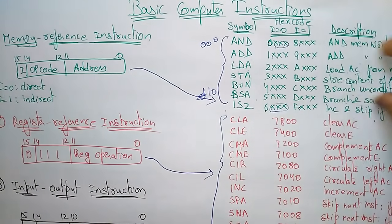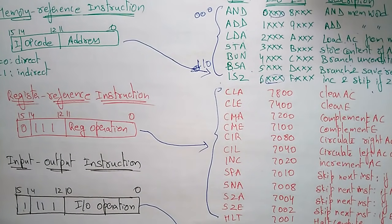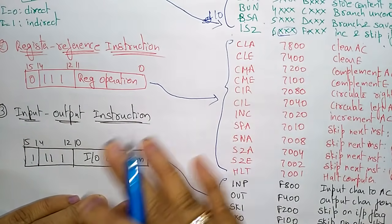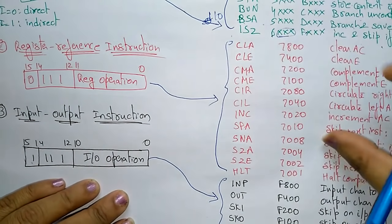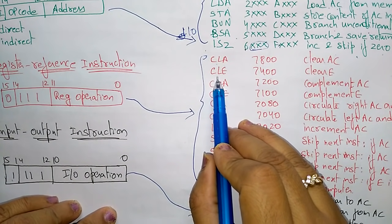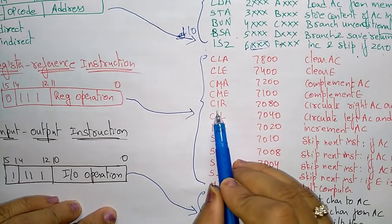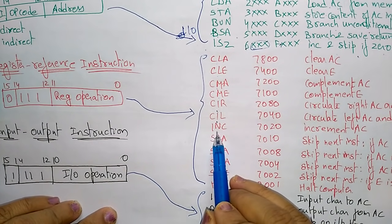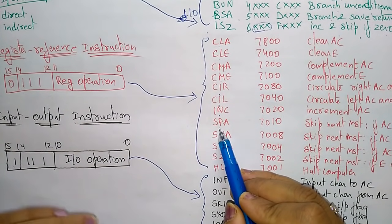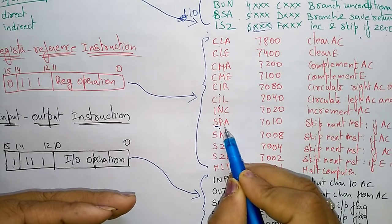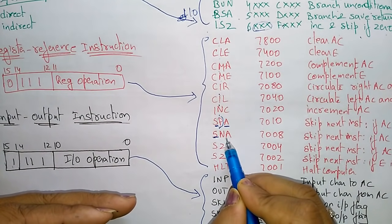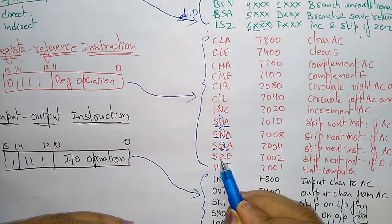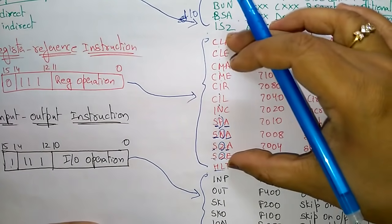Now coming to the register reference instructions: these include complements, circulate, and skip operations — CLA (clear accumulator), CLE (clear E), CMA (complement accumulator), CME (complement E), CIR (circulate right accumulator and E), CIL (circulate left accumulator and E), INC (increment accumulator), SPA (skip if accumulator is positive), SNA (skip if accumulator is negative), SZA (skip if accumulator is zero), SZE (skip if E is zero), and HLT (halt computer).